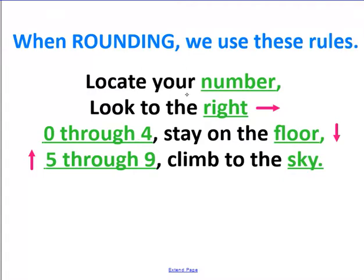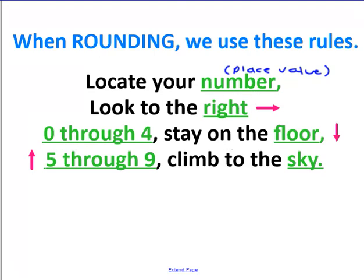So again, locate your number — this is going to be your place value. Look to the right, so you're going to look at the number on the right. If the number on the right is 0 through 4, then that number will stay the same. And if that number is 5 through 9, then this number will go up.